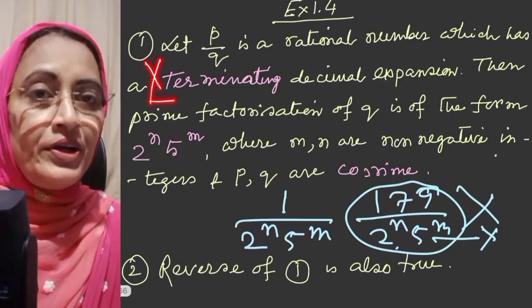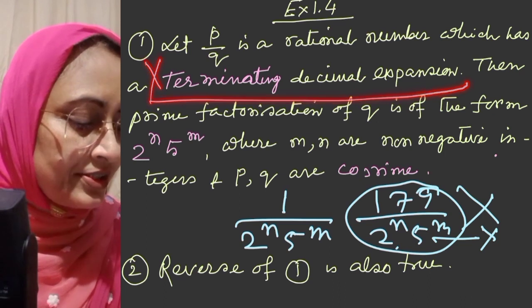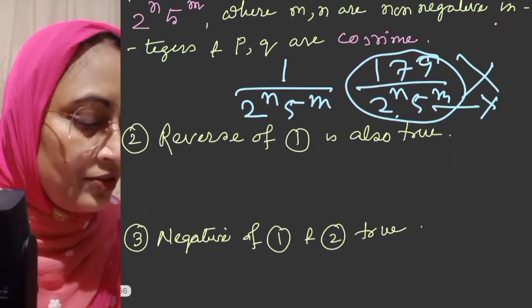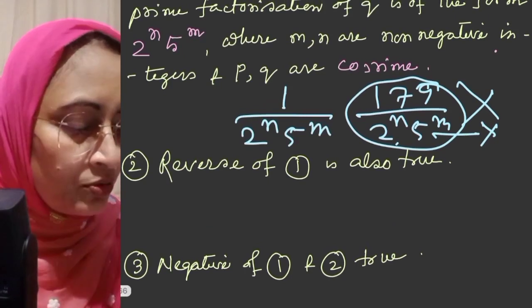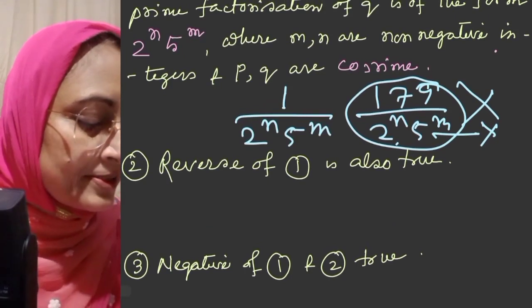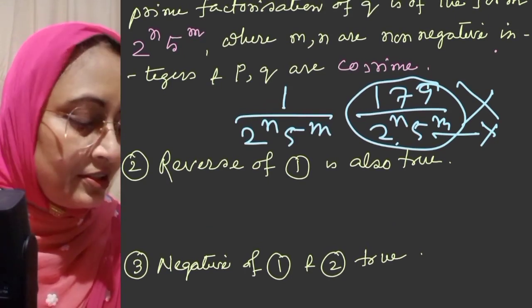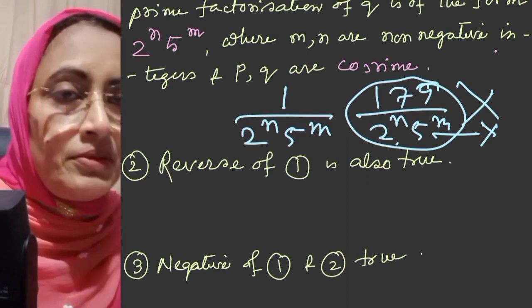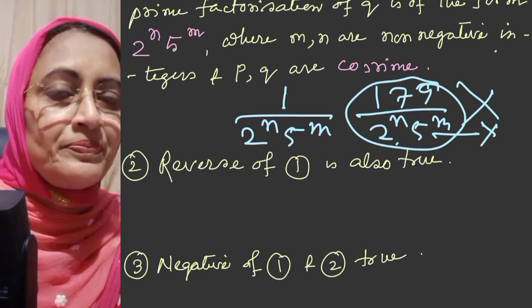Point 3 covers the negative of these things. If P by Q is a rational number which is not a terminating decimal expansion, then the denominator cannot be written in the form 2 to the power n into 5 to the power m, where m and n are non-negative integers and P and Q are coprime.